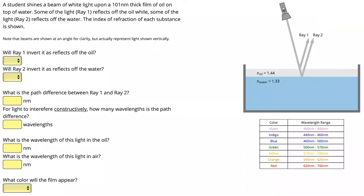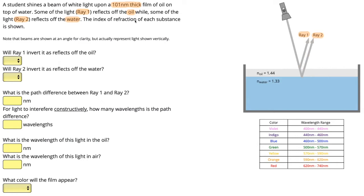In this problem, a student shines a beam of white light upon a 101 nanometer thick film of oil on top of water. We can see an oil layer on top of a water layer and the beam of light coming in to shine on it. Some of the light — ray one — reflects off the oil, while ray two reflects off the water. The index of refraction of each substance is shown: the index of refraction of oil and the index of refraction of water.